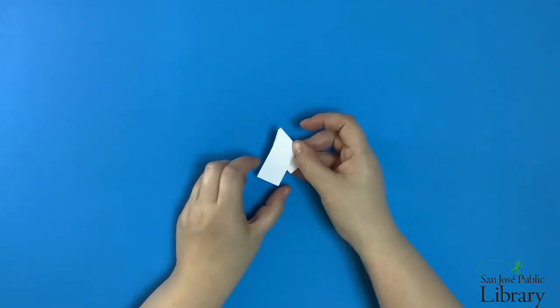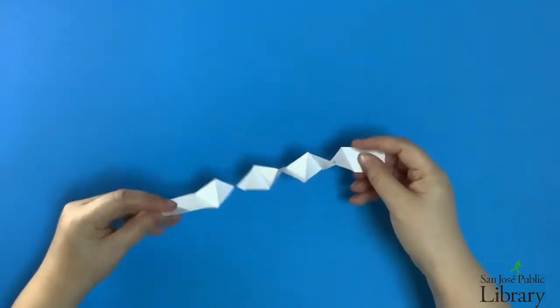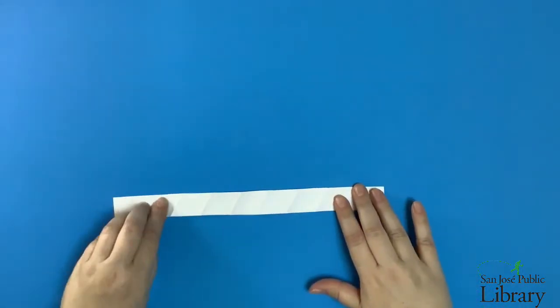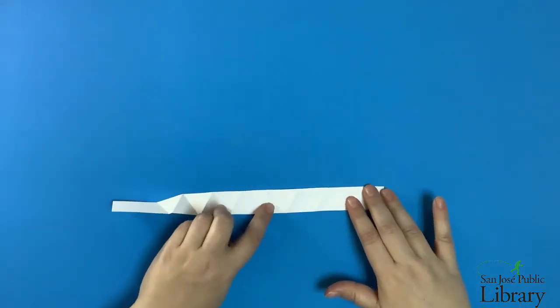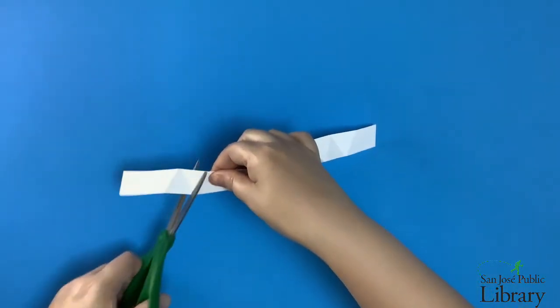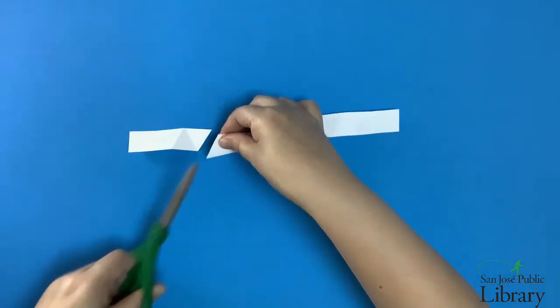Once I have my piece of paper entirely folded up, I'm going to unfold it and now we have our strip of equilateral triangles. I'm going to count out ten triangles and then I'm going to trim the edges of the strip of paper to remove the extra triangles.